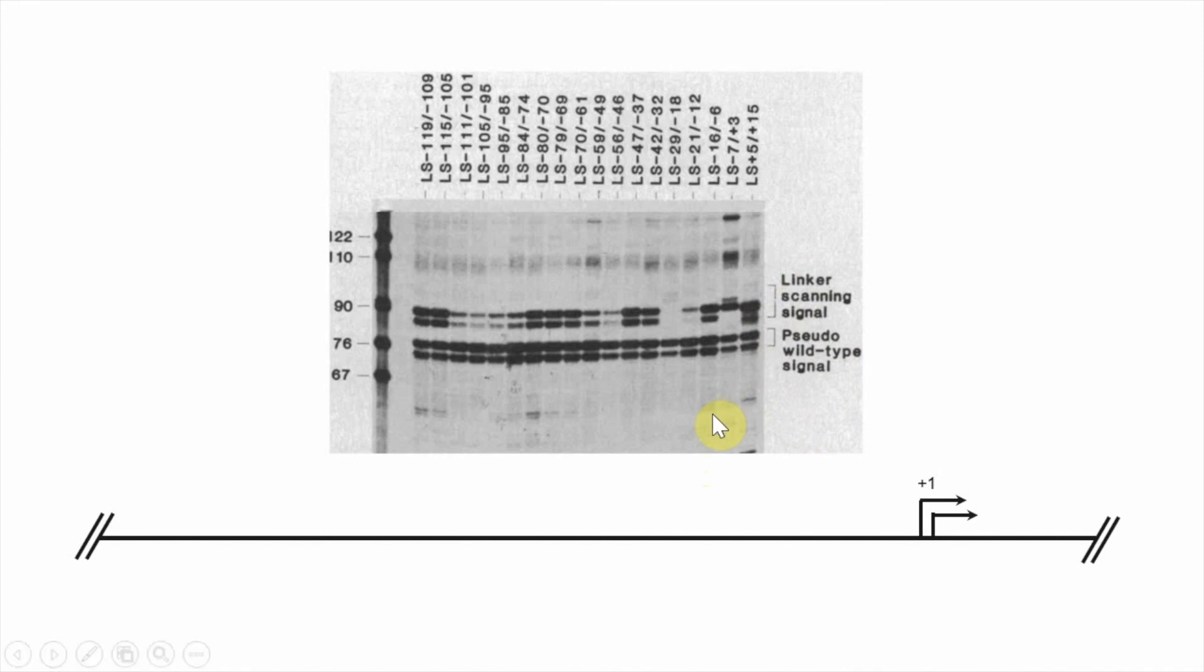The last thing we need to remember before jumping into the data analysis of this gel is that for each lane, we're going to compare the level of expression in the pseudo-wild type signal to the linker scan signal. This is because the pseudo-wild type controls for differences in wild type expression between oocytes. Even though they all have the same transcription machinery, one oocyte might have higher levels of wild type transcription than the next due to natural variation.